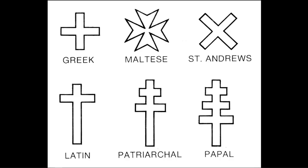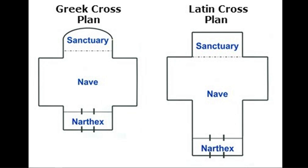Broadly speaking, the basilica form developed into the characteristic Latin cross pattern we see in medieval cathedrals, and the imposition of a circle or a dome on a square that we find in the martyrium, that circular form, developed into the Greek cross formation we see in the eastern or Byzantine churches that carries on even today. The Latin cross has this elongated lower section, whereas the Greek cross has arms of more or less equal length.